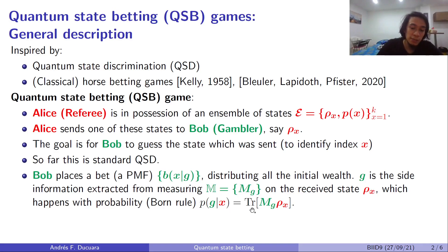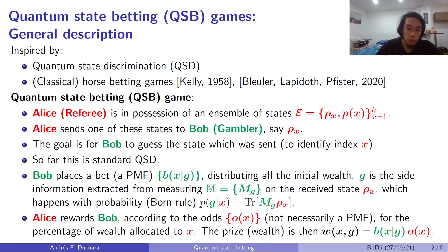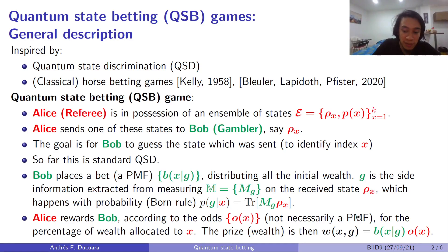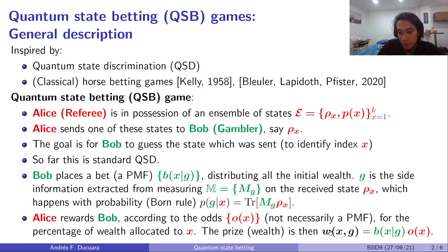g is going to be related to x by means of the Bayes rule. Then, after Bob places his bet, Alice is going to reward him according to a function o of x, which is not necessarily a probability mass function, which is called the odds. Alice is going to reward Bob for the percentage that Bob allocated to the index x, and the prize is basically this product here.